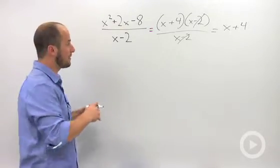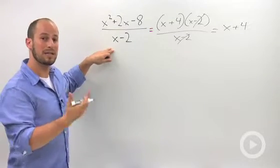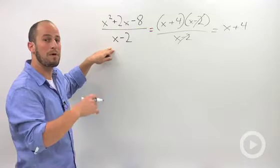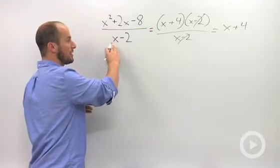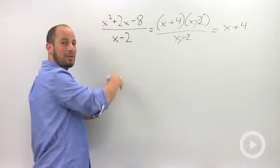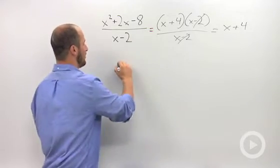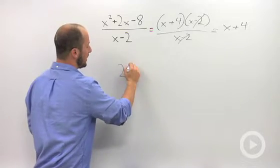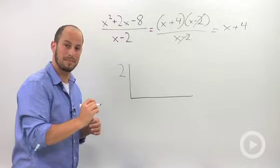So how synthetic division operates is what you need to do is look at your divisor, look at your denominator, and figure out what number will make that 0. So here we have x minus 2. We want this to be equal to 0. We would have to plug in 2. Take that number and write it down, and then make a sort of upside down bracket.